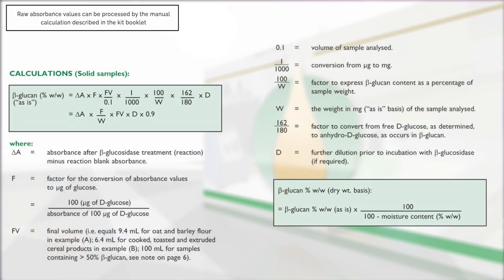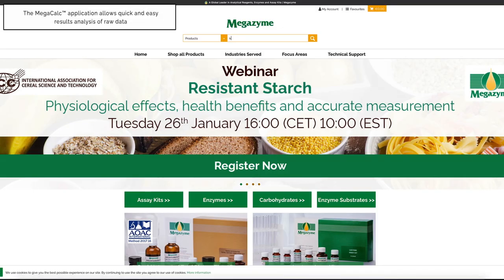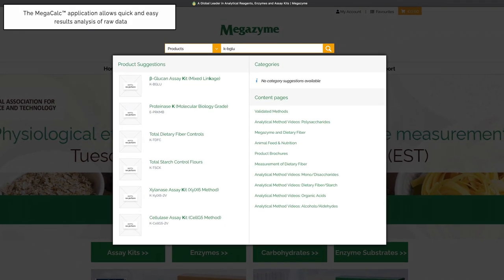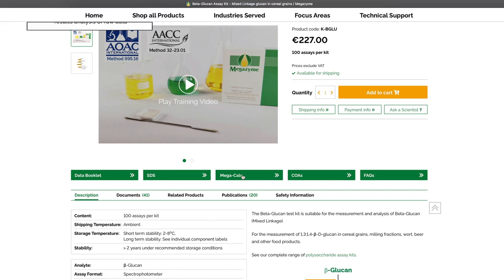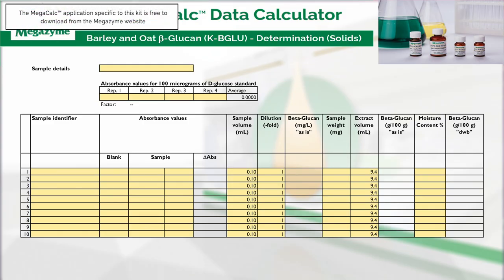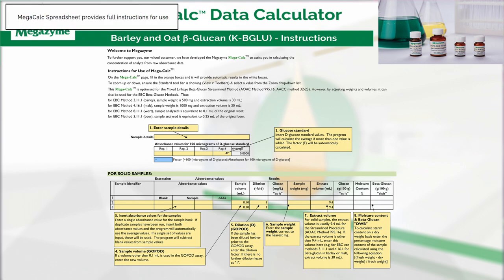In absorbance mode, the results output are raw absorbance values for both blank and samples. Therefore, the calculation of beta-glucan content can be performed manually, as described in the calculations section of the kit booklet. Megazyme has also developed specific Excel-based Megaquant applications for each Megazyme kit to allow quick and easy results analysis. Results can be analyzed using the Megaquant application specific to this beta-glucan assay kit, which is available to download free of charge from the Megazyme website. The Megaquant spreadsheet provides full instructions for use.